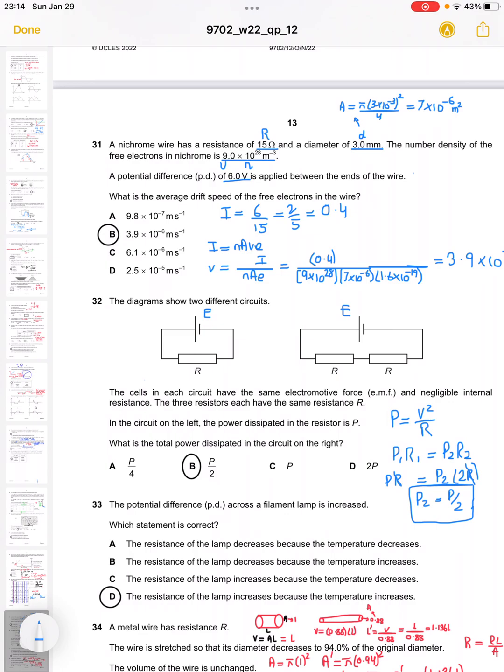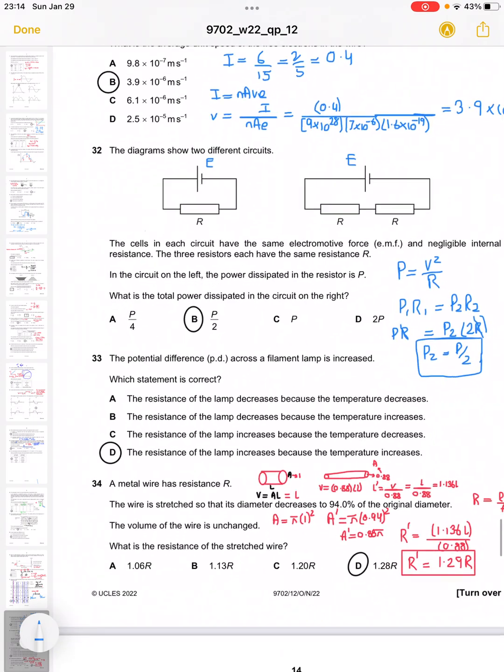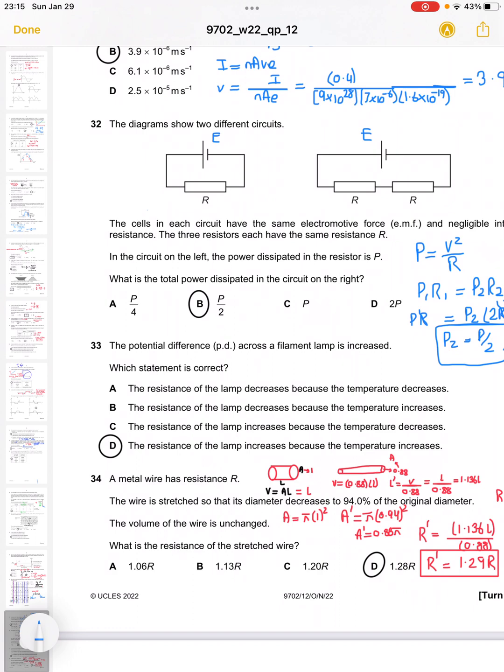Question 33 says that a potential difference across a filament lamp is increased. Which statement is correct? The correct answer is the resistance of the lamp increases because the temperature increases. That's a simplistic reasoning for the increase of potential difference across a filament lamp.